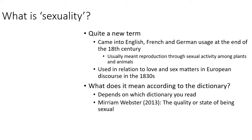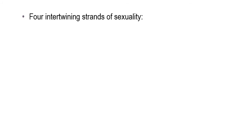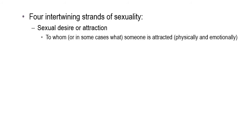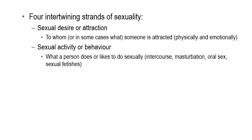The first strand is sexual desire or attraction — to whom, or in some cases what, someone is attracted both physically and emotionally. The second component is activity or behavior — what a person does or likes to do sexually, such as intercourse, masturbation, or sexual fetishes.